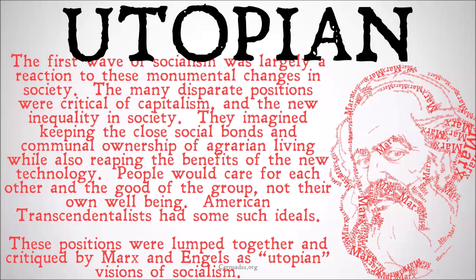American Transcendentalists — which we will cover in an upcoming video — had some such ideals and started some such utopian communities. These positions were lumped together and critiqued by Marx and Engels as quote-unquote utopian visions of socialism, and frequently, if not always, failed for a range of reasons, and so were an ineffective method of reaching that socialist goal of labor sharing in the profits of the capital.